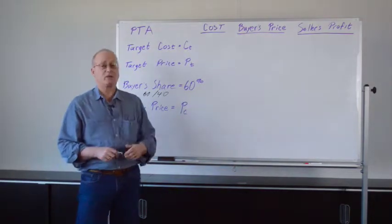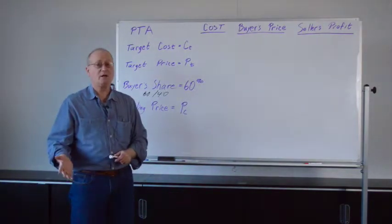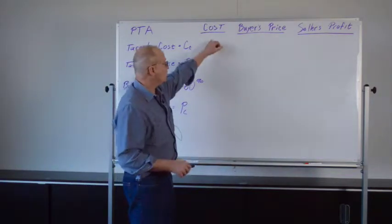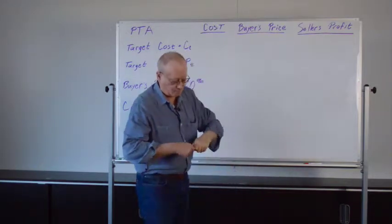So once we reach the ceiling price, any additional cost overruns are going to fall entirely on the seller. So we're going to step through this and see how this works. We're going to look at the cost, the buyer's price, and the seller's profit.